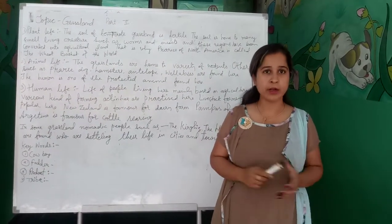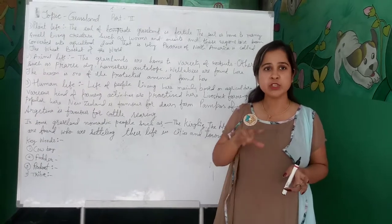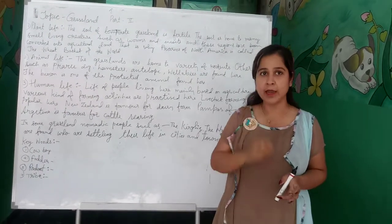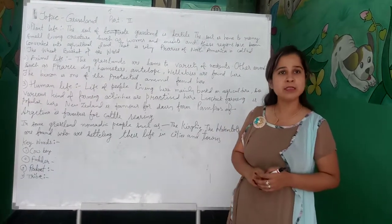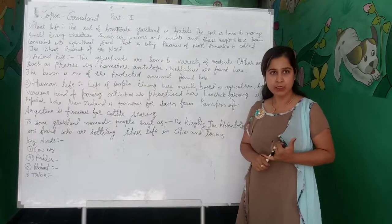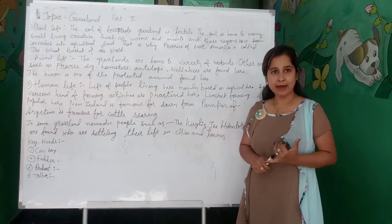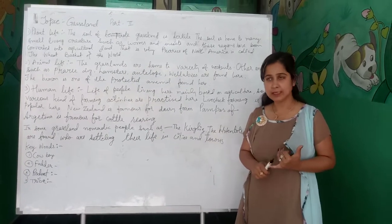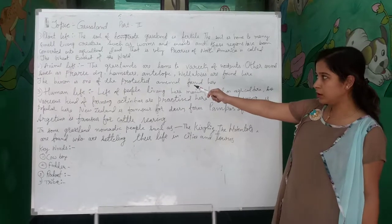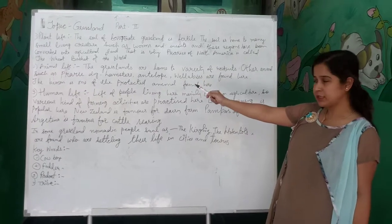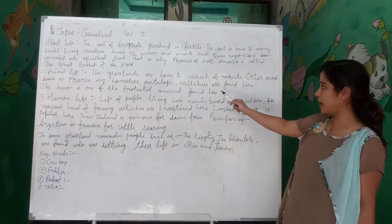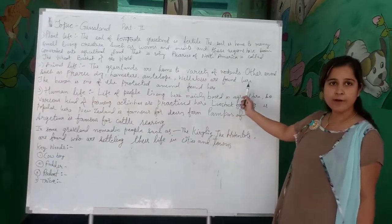What are rodents? Rodents are those animals which gnaw their food from their front teeth. Examples of rodents are rabbit, rat, and mice. Other animals such as prairie dog, hamsters, antelope, and wallabies are also found in grasslands.